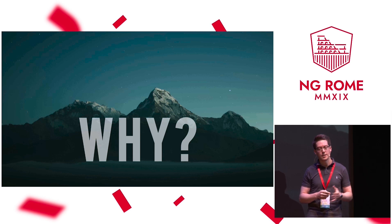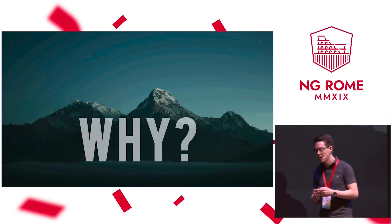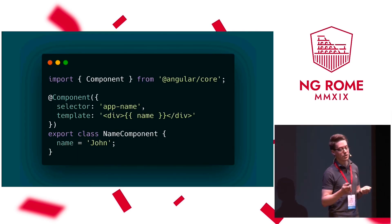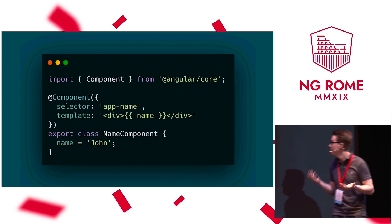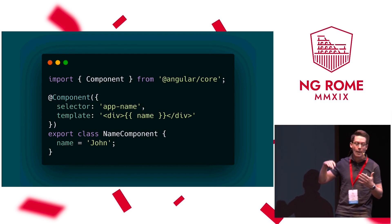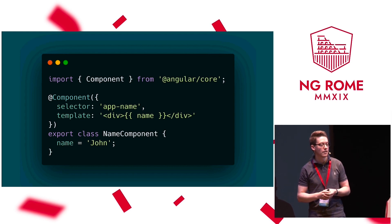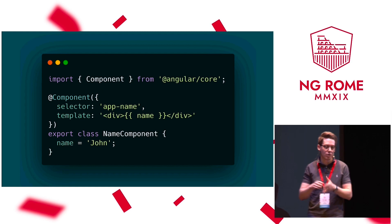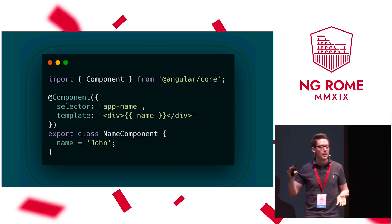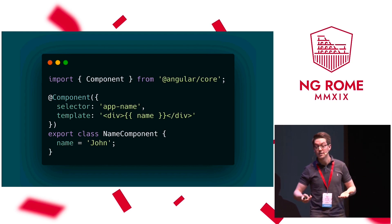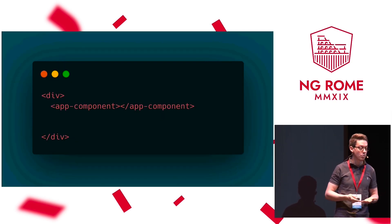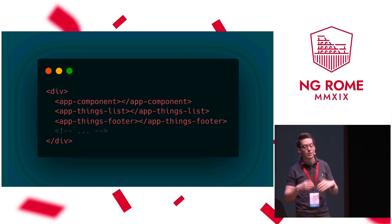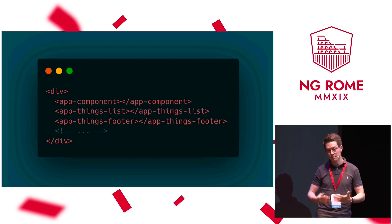First, to answer that question you have to understand the problem of growing Angular applications. When you start your Angular application, you basically start with a component like this. We've seen it — it's a normal component, we've got a template, a name, a data binding, and it all works pretty well. Technically we could do a whole Angular application in one component, but we do not want to do that. So what we do is build multiple components, and the application grows and grows and grows.